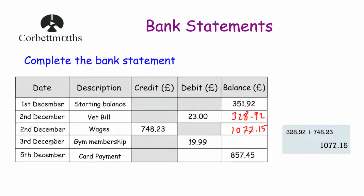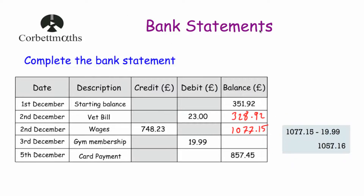On the 3rd of December there's a gym membership — a debit of £19.99. That's a regular monthly payment, so we take it away from £1,077.15. Using the calculator, that gives us £1,057.16.